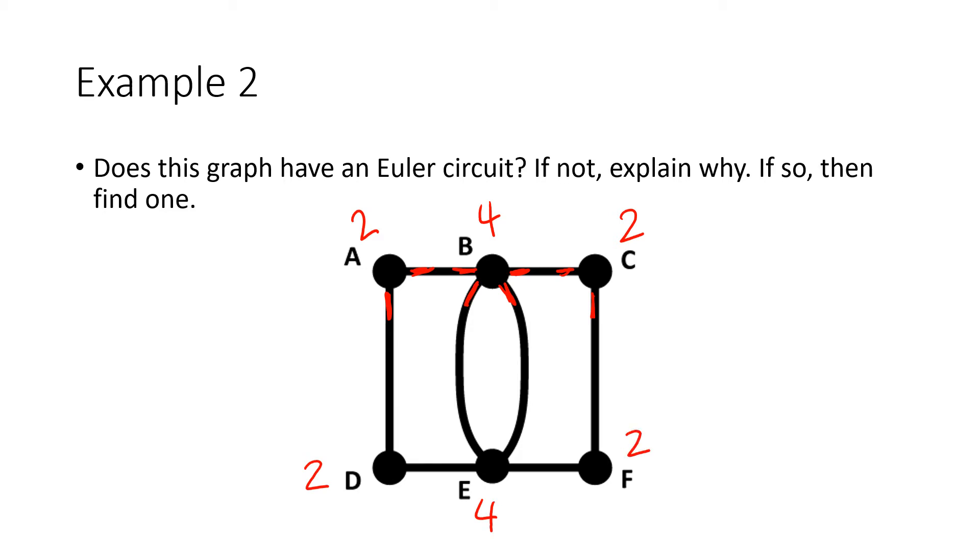Now, all we got were 2's and 4's. Those are both even numbers. And so since there are no vertices with odd degree, this is when Euler's theorem tells us that there is an Euler circuit.